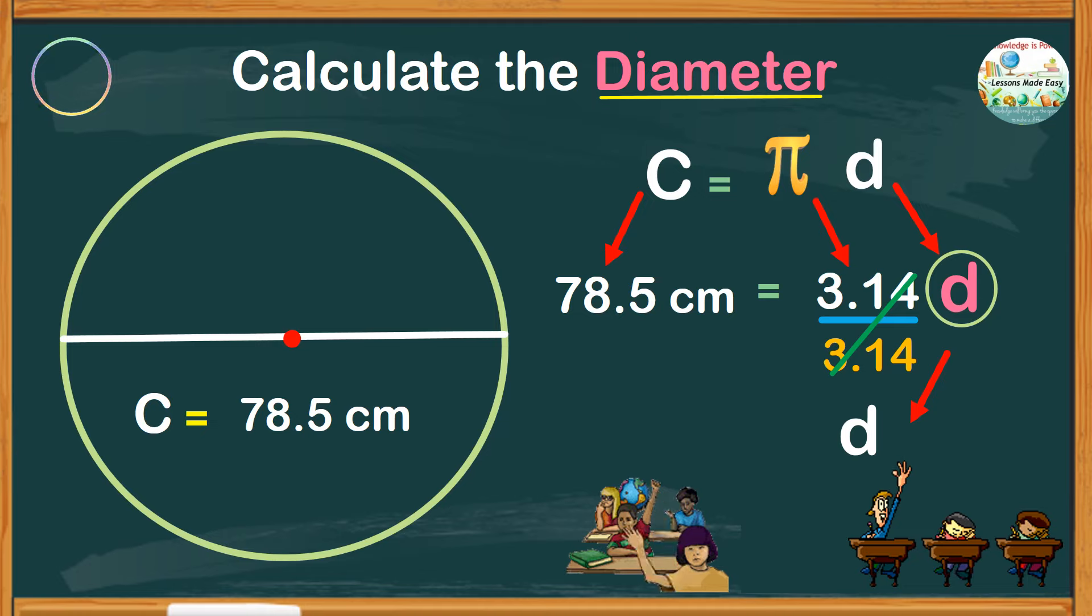Because we divide 3.14 on one side of the equation, we must also do the same on the other side. So divide the circumference by 3.14, and whatever the quotient is, is our diameter. So divide 78.5 by 3.14, we get a quotient of 25.